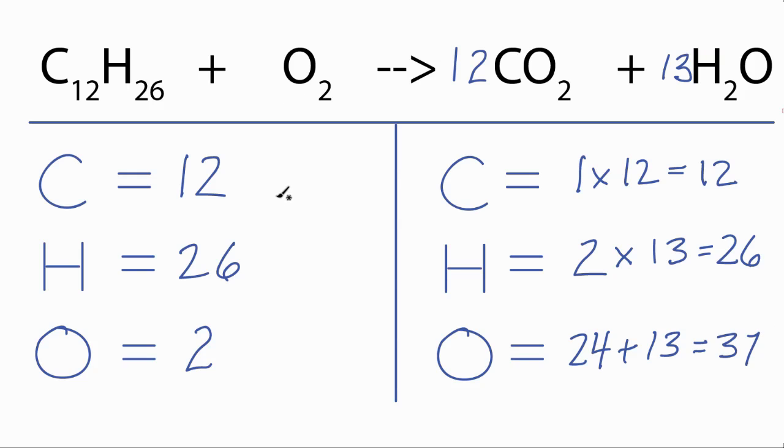Back over on the reactants, I only have 2. But if I multiplied 2 times 37 over 2, the 2's would cancel out, and I'd be left with 37. That would balance the oxygens. So we'll put a 37 over 2 in front of the oxygen. And this equation is balanced.